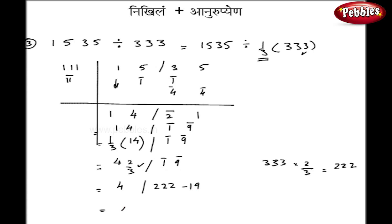Subtracting 19 from that, I get 4 and 203. So my final answer, quotient is 4 and remainder is 203.